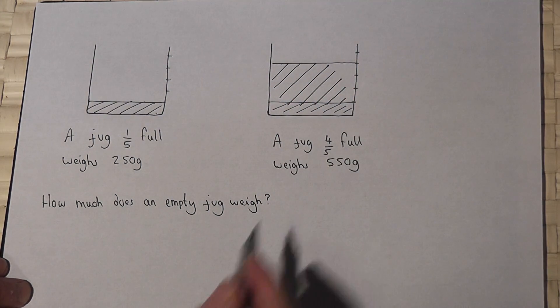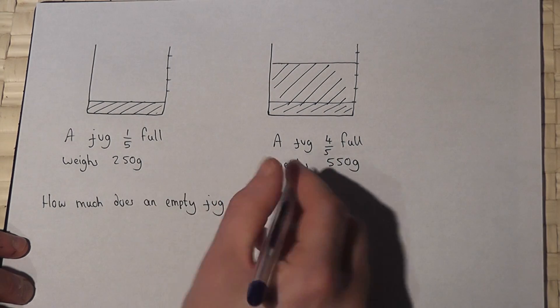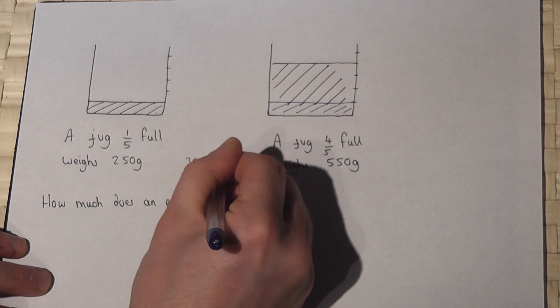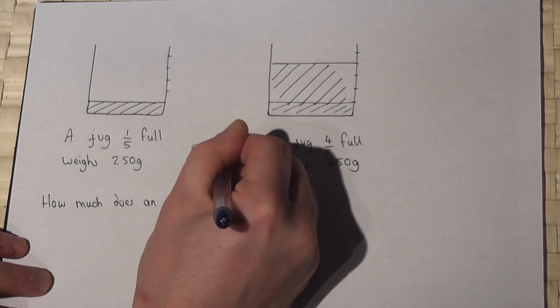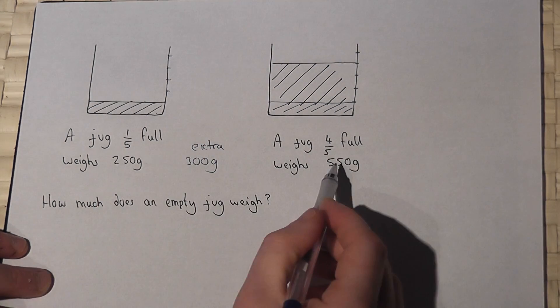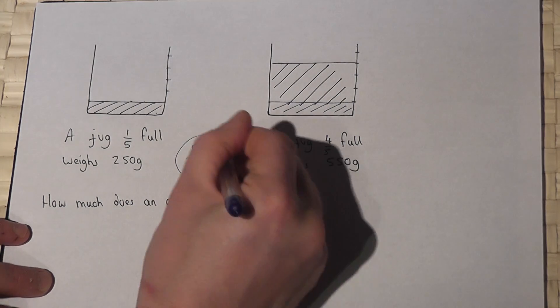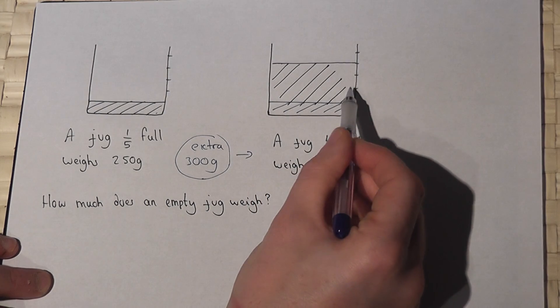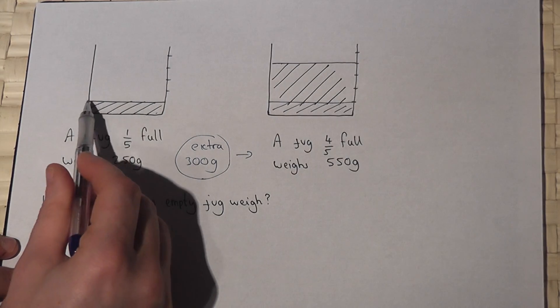Now jug two weighs an extra 300 grams—250 to 550 is an extra 300 grams—and this has got an extra three increments. That's got one increment, this has got one, two, three, four.